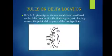Rule 1 for locating delta: the marked delta is considered the delta because it is the first ridge or part of a ridge nearest the point of divergence of the type lines. As seen in the figure, we have a ridge, a dot, and two type lines. The dot is considered the delta because it is the first ridge nearest to the point of divergence.